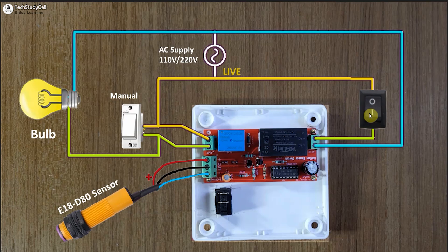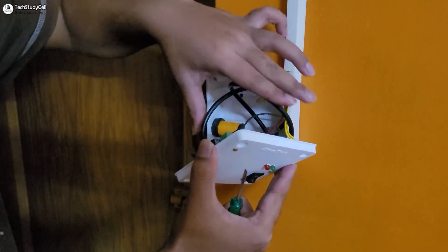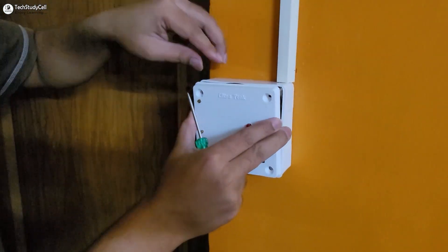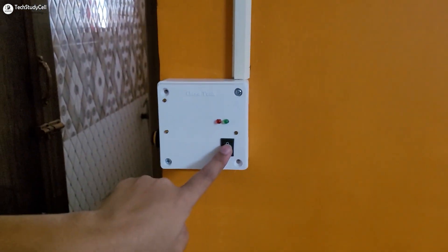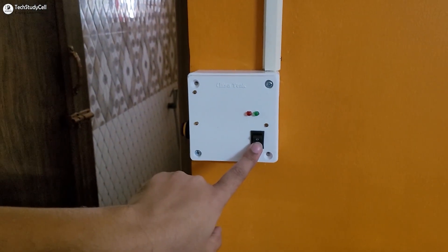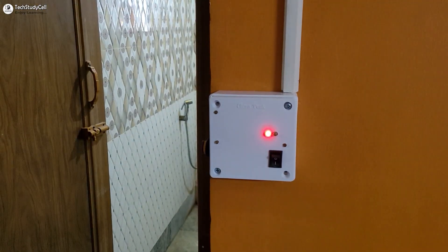With this switch we can give supply to the PCB. So if you turn off the switch, the sensor will not work. But if you turn on the switch, the sensor will sense the motion and accordingly the relay will control the light. Now once again I will check all the connections, then we will quickly test whether the circuit is working or not.